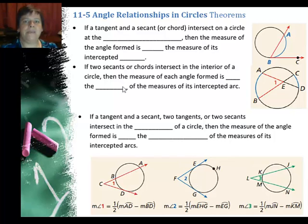Now 11-5, we're looking at angle relationships in circles. Now we kind of touched on this in the 11-4 that we just talked about. When you have these vertices inscribed angles, then it's always half the intercepted arc.